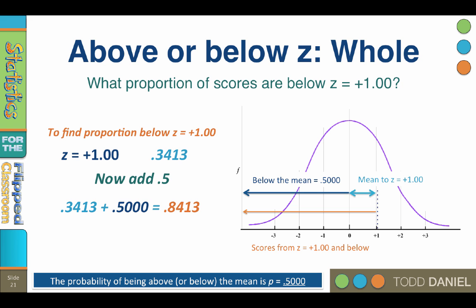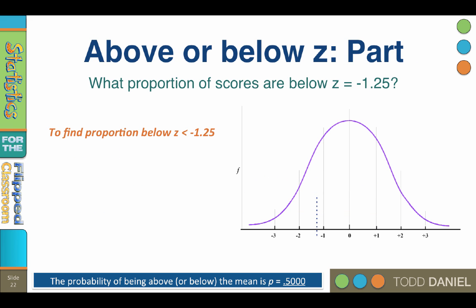But what if our task involved finding a small portion of the bell curve? Say, we want to know what proportion of scores are below z equals negative 1.25. This is only a small part of the normal curve, but we can use the same techniques to figure it out.